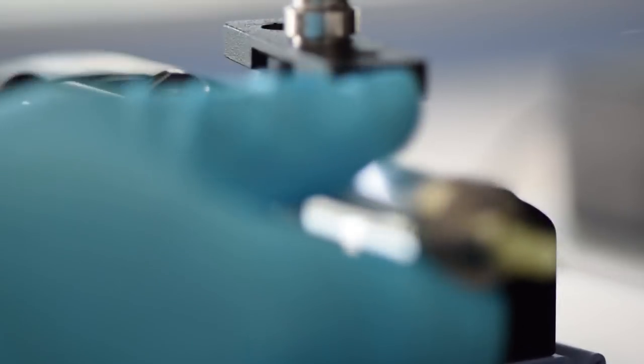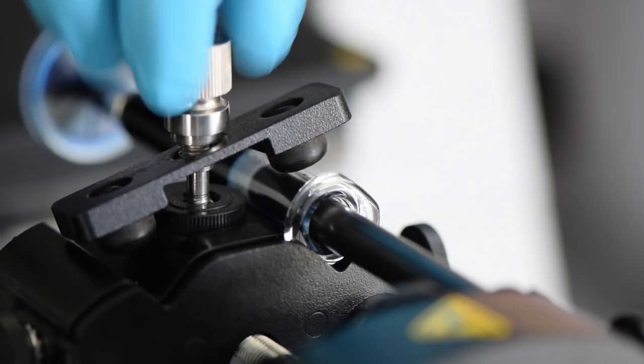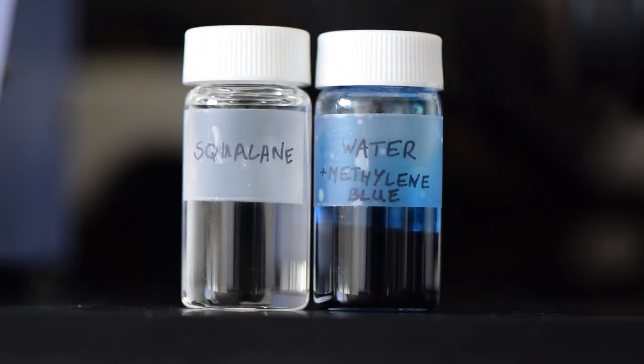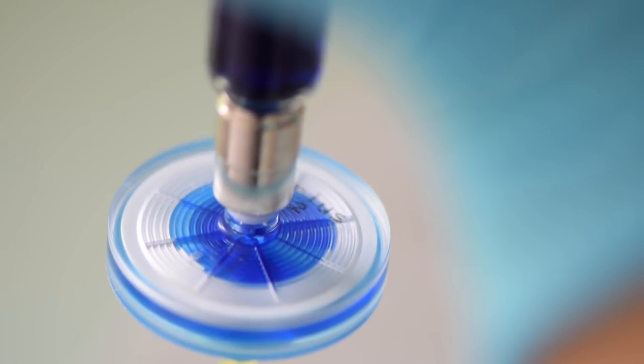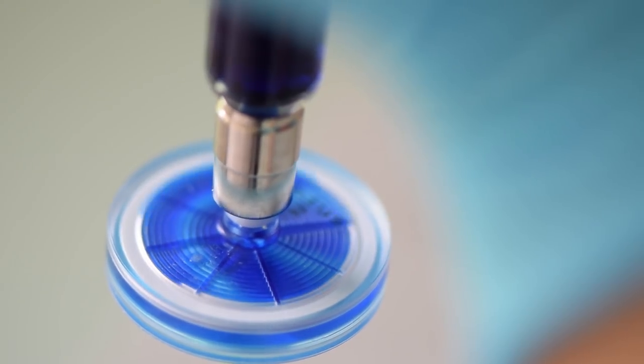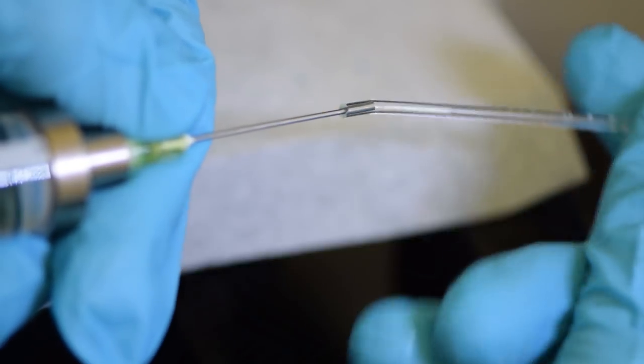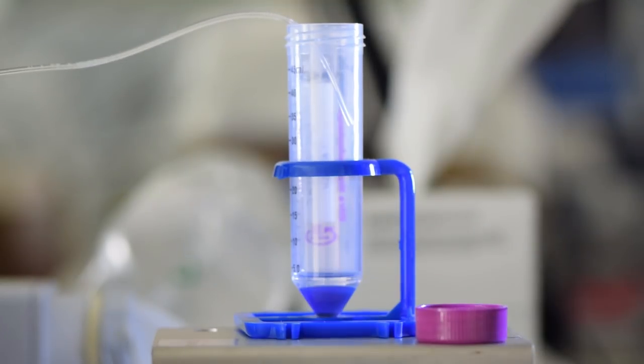Then we're going to put the oil and water in using syringe pumps which control the flow rates of the liquids very precisely. A blue dye was added to the water so we can see it more easily. It's filtered to prevent impurities from clogging up the chip. Then we'll connect the inlets to the two syringes and the outlet to a vial where we'll collect the droplets. Now everything's ready.